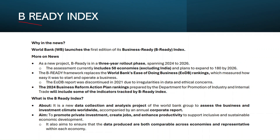A new index launched by the World Bank is called the B-Ready Index, or Business Ready Index. It will be rolled out in a three-year phase from 2024 to 2026. The current assessment includes 50 countries but does not include India for now. It replaces the earlier Ease of Doing Business index, which measured how easy it is to start and operate a business in a country.